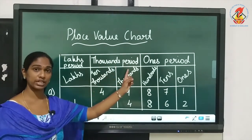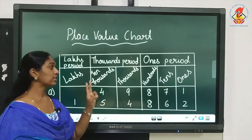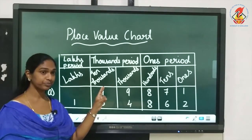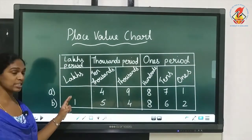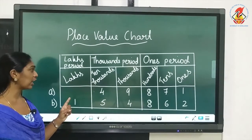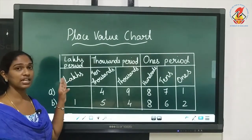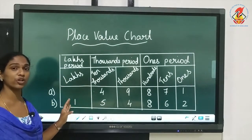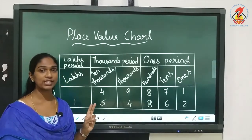Then you have the thousands period. Under the thousands period you have 2 places: thousands and ten thousands. After the thousands period you have the lakhs period. Under the lakhs period there are also 2 places — lakhs and ten lakhs — but since this year we are studying only 6 digit numbers, we are dealing only with the lakhs place.